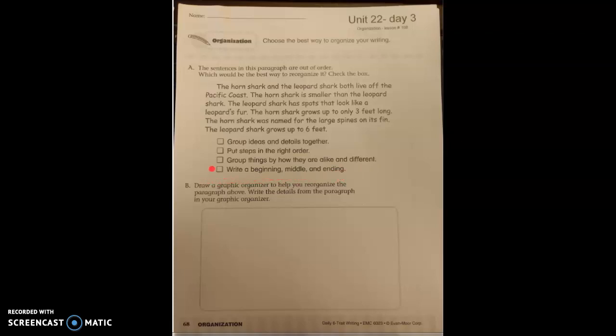Place a check mark in the box of the organization method you think is correct. If you put your check mark in the third box for group things by how they are alike and different, you are correct.